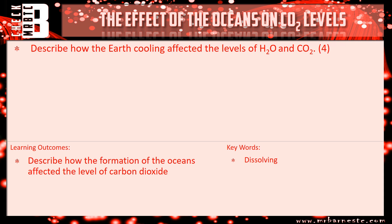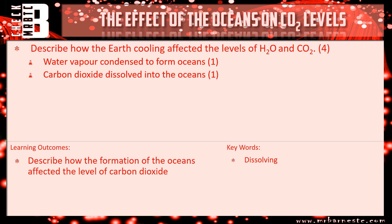Describe how the Earth cooling affected the levels of H2O and CO2. The first thing is your H2O, your water vapour, condensed to form the oceans — you get one mark for saying it condensed to form the oceans. The next thing is what happened to the carbon dioxide: it dissolved into the oceans, and it's really important to say what effect that had — carbon dioxide levels went down, decreased.